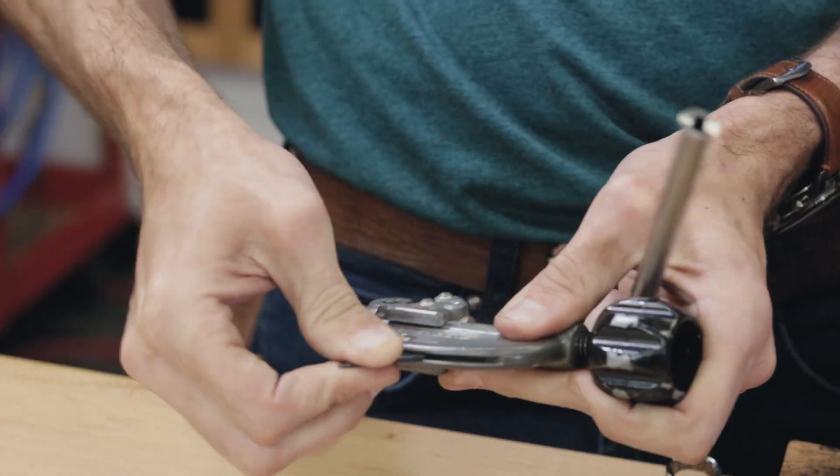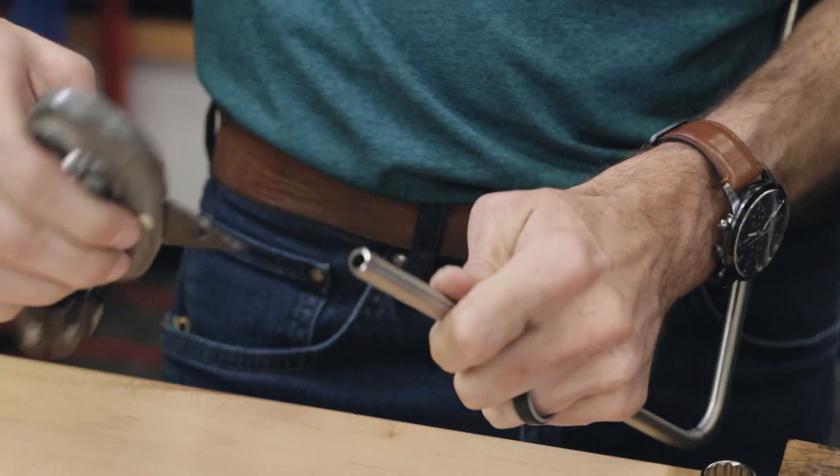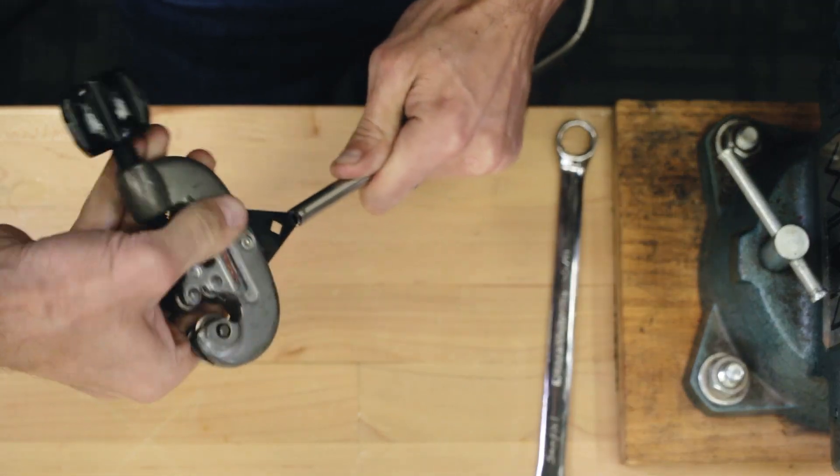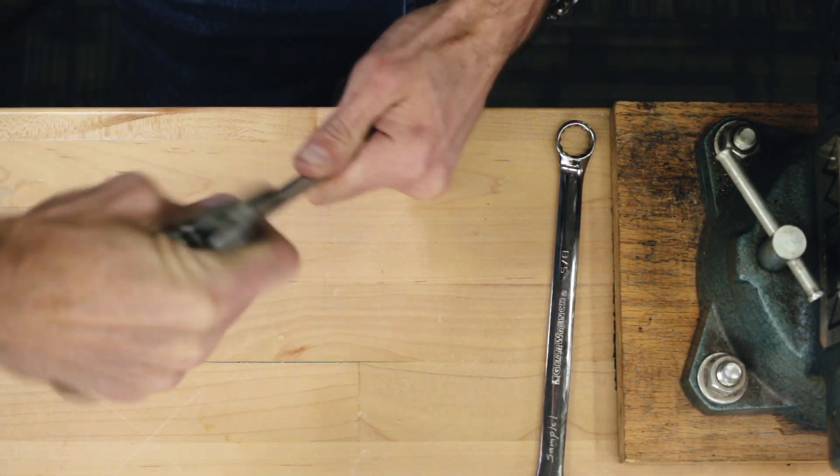After cutting the tubing, use a deburring tool to remove any sharp edges or burrs from the tubing. This is an important step to ensure that the tubing fits securely into the fittings without causing any damage.